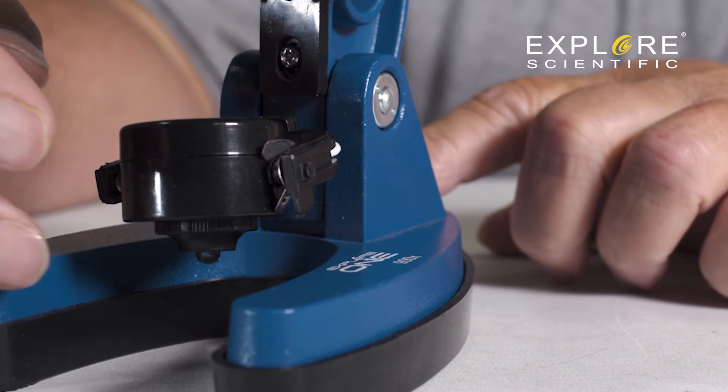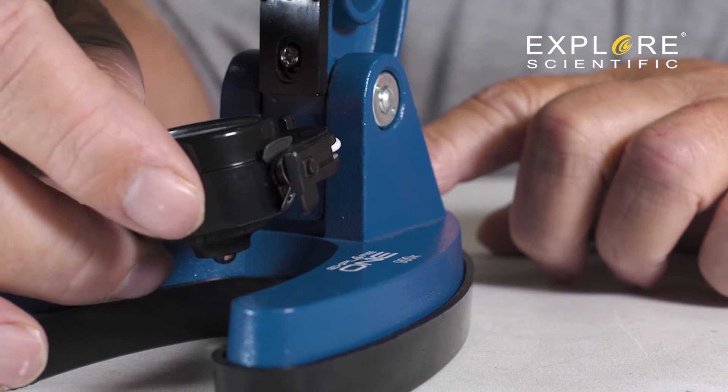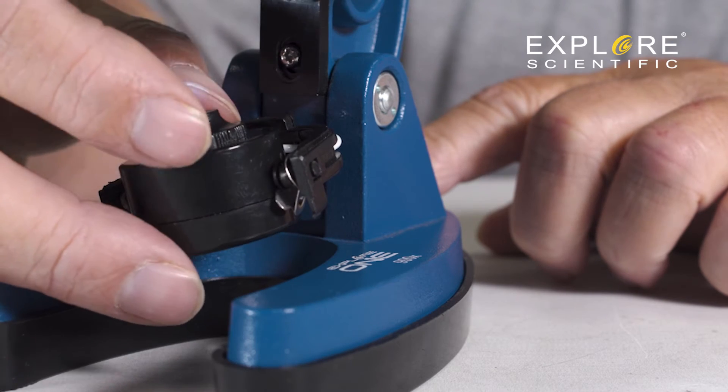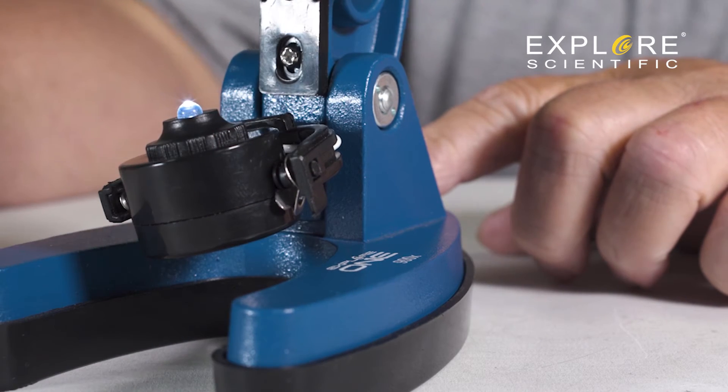On the right side of the light assembly is a metal tab. When the light is rotated, the tab touches the contact point, completing the circuit so power flows through the light.